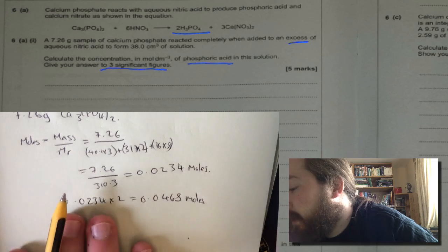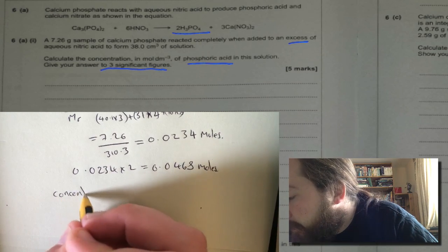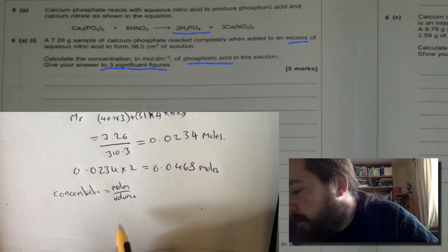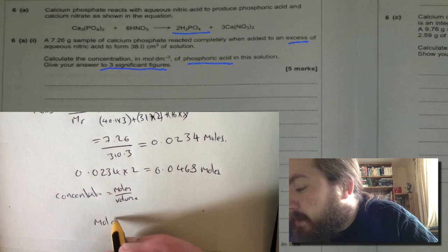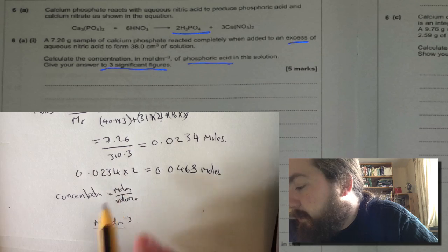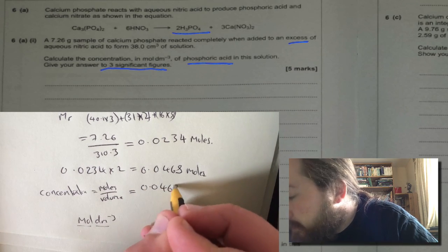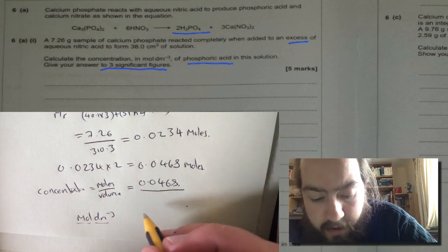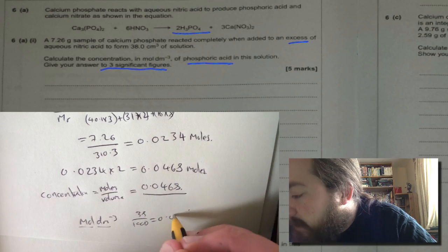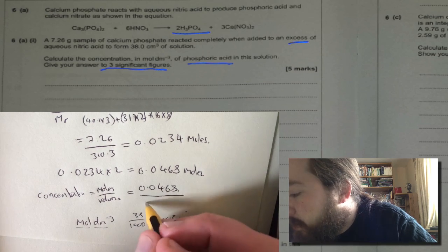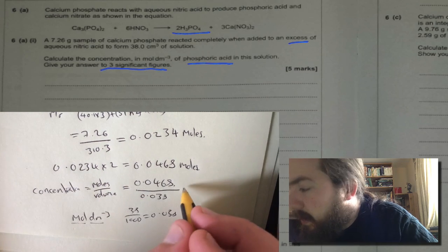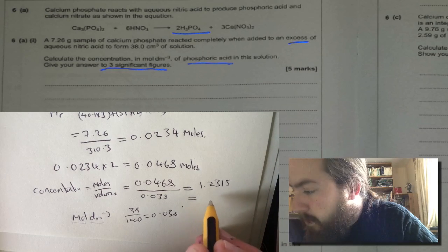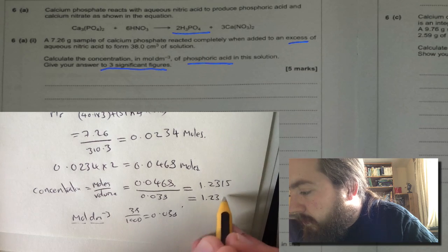The last part of the question is to work out what the concentration is, so we use concentration equals moles divided by volume. If you can't remember the equation in the exam, just remember to use the units: mole dm⁻³ literally means moles divided by liters. For this we've got 0.0468, and we're going to divide that by our volume in liters. To get from centimeters cubed into liters we divide by a thousand, so 38 over a thousand equals 0.038. So our answer is 0.0468 divided by 0.038, which gives us 1.2315, which we need to round to three significant figures. So our answer is 1.23 mol dm⁻³. Don't forget the units.